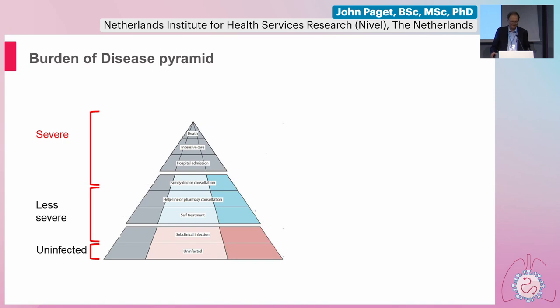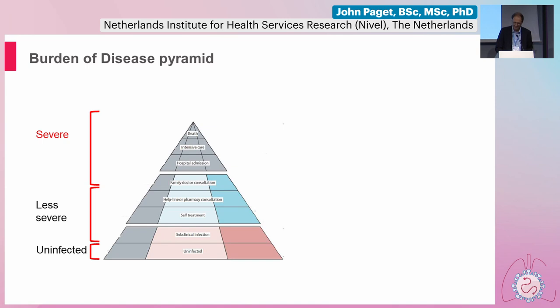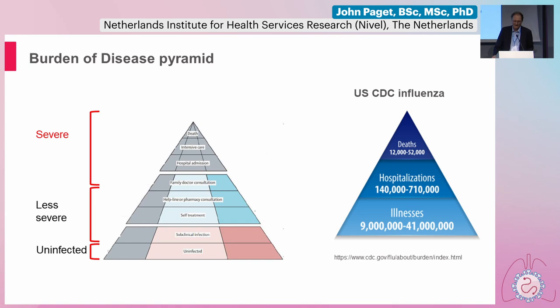In terms of RSV burden of disease in the elderly, it's important to highlight the burden of disease pyramid. At the top you have mortality, then ICU rates and hospitalizations, working down into primary care. Then there are people who are infected but don't see a doctor, people who just stay at home, and then the uninfected. From a public health perspective, we're interested in the severe cases — deaths, hospitalizations, and people who get medical attention in primary care.